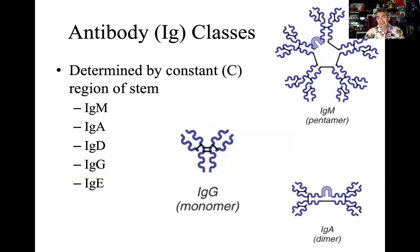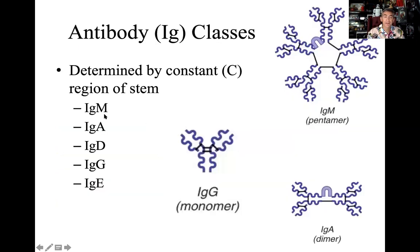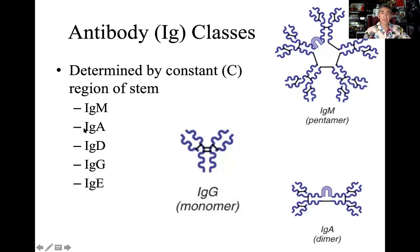Antibody or immunoglobulin classes are determined by the constant region of the stem. We have IgM, IgA, IgD, IgG, and IgE — which spells the word MADGE. So: immunoglobulin M, immunoglobulin A, immunoglobulin D, immunoglobulin G, and immunoglobulin E.